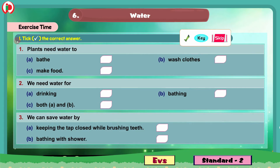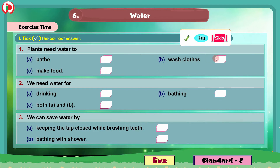The first bit here is tick the correct answer. Here we have 3 incomplete sentences. We have to complete these sentences by choosing the correct answer from the given options and by picking the correct answer box here.